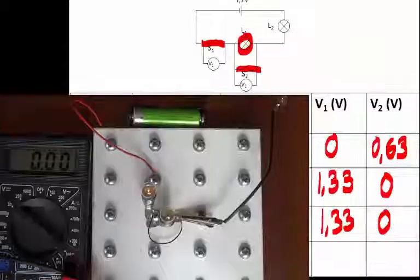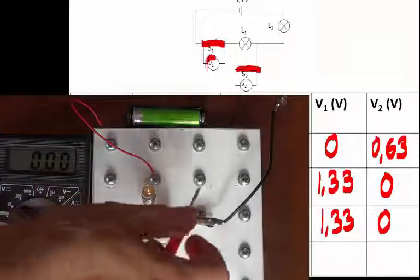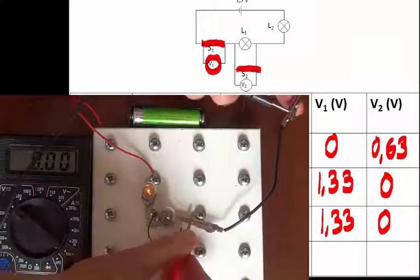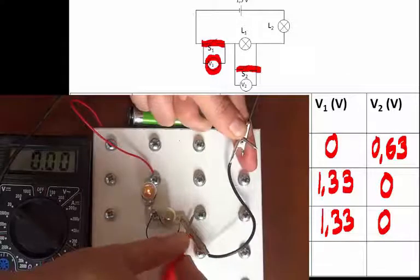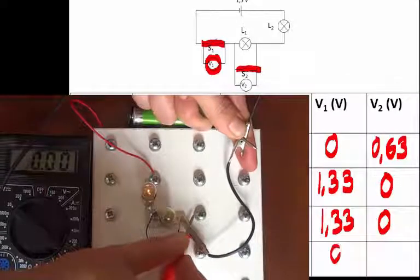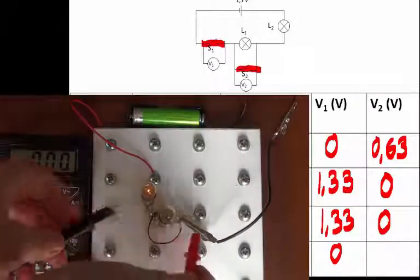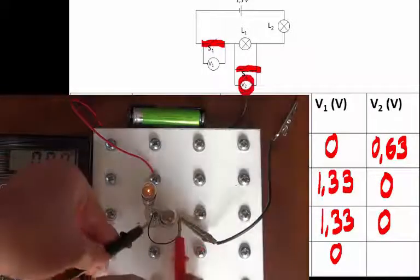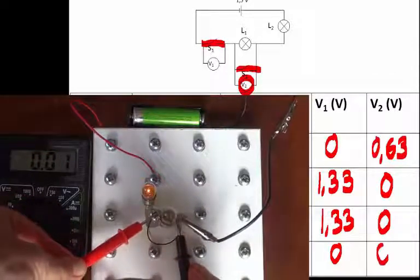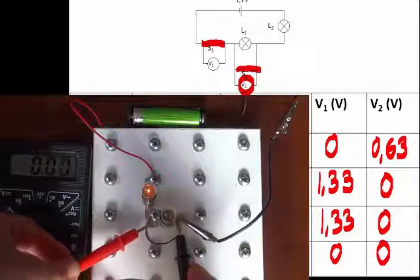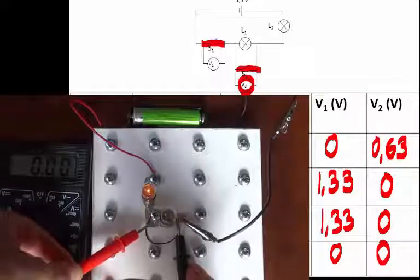So now we need V1. V1 is the voltage across that crocodile clip. And now the crocodile clip is connected, and so it's a good conductor: 0 volt. And now we need voltage 2. So we place the voltmeter across switch 2, and we get 0 volt. Because in effect, we are measuring the voltage across that good conductor, and the voltage across a good conductor is 0 volt.